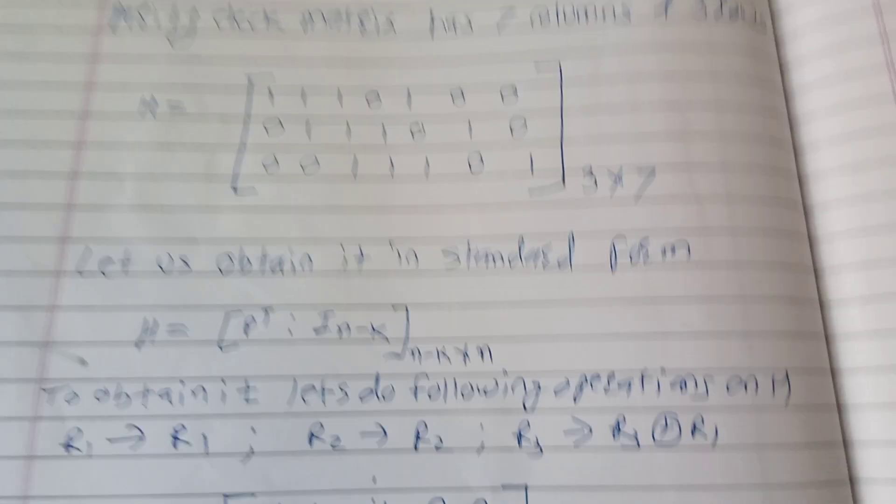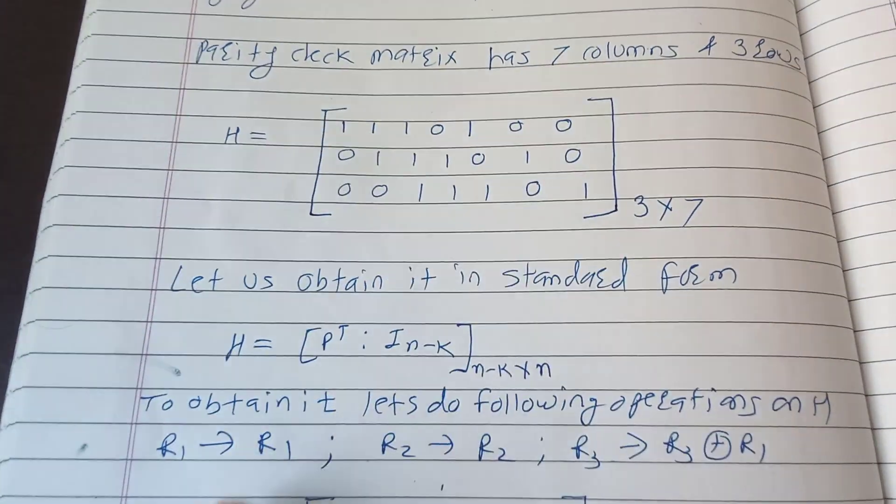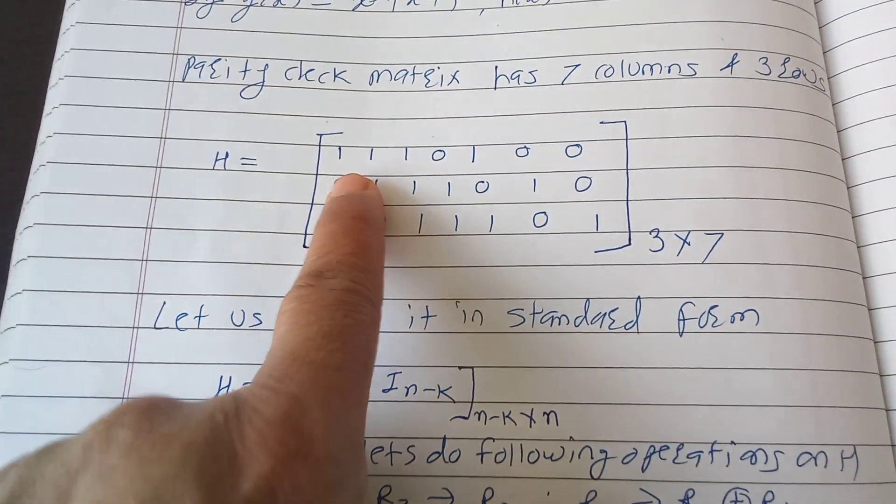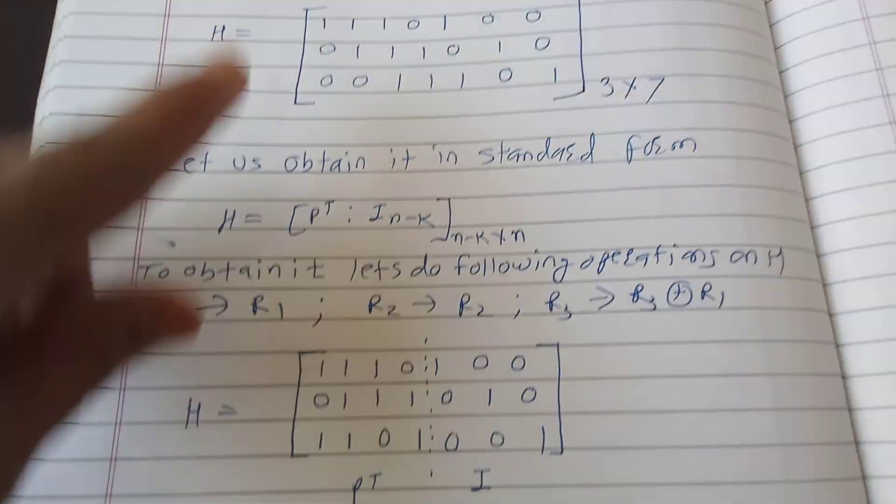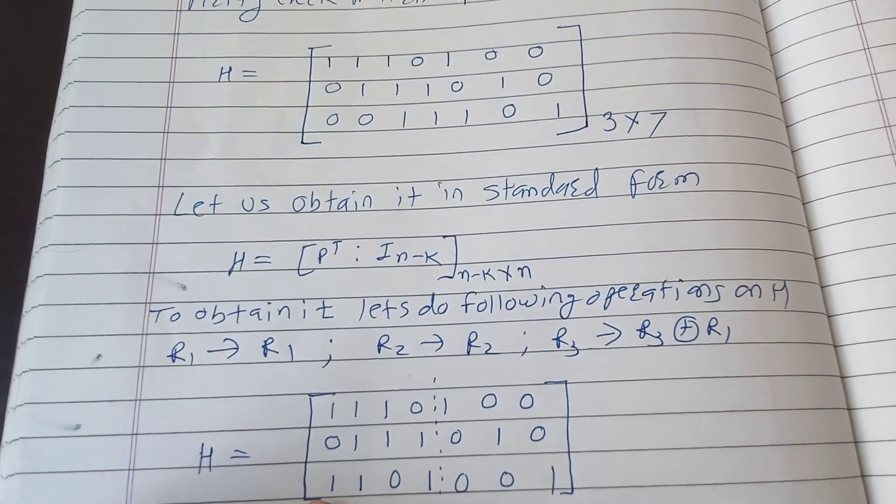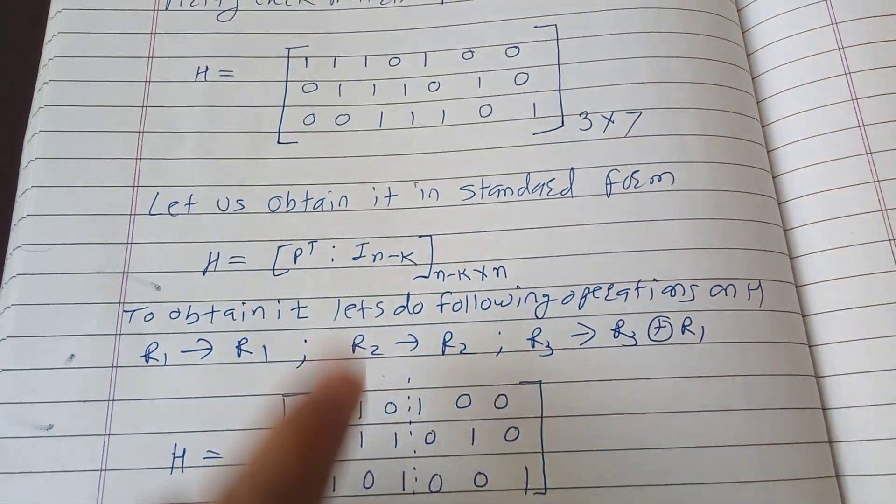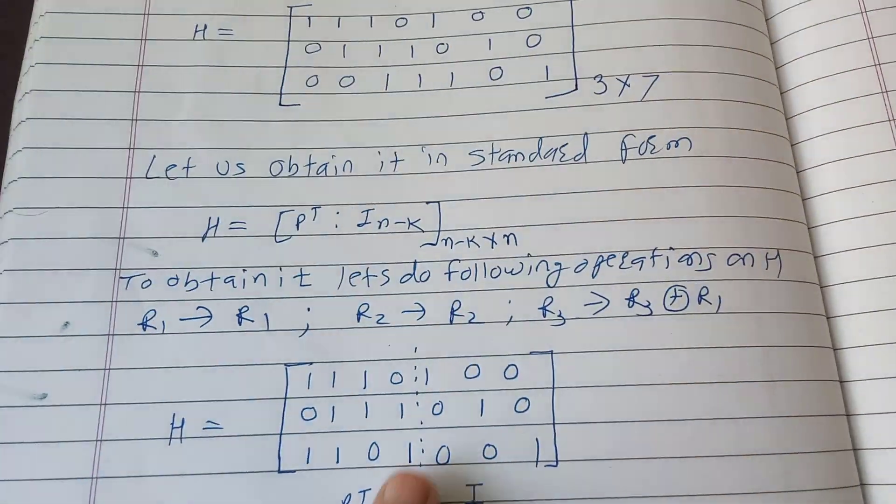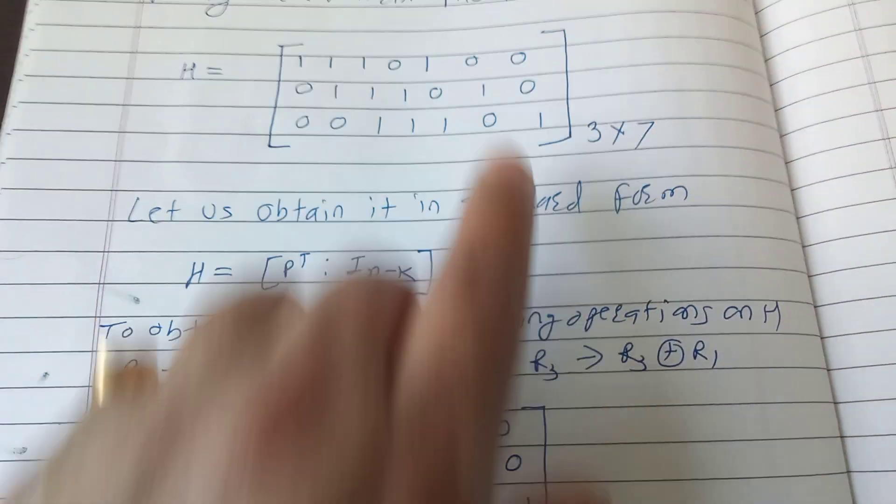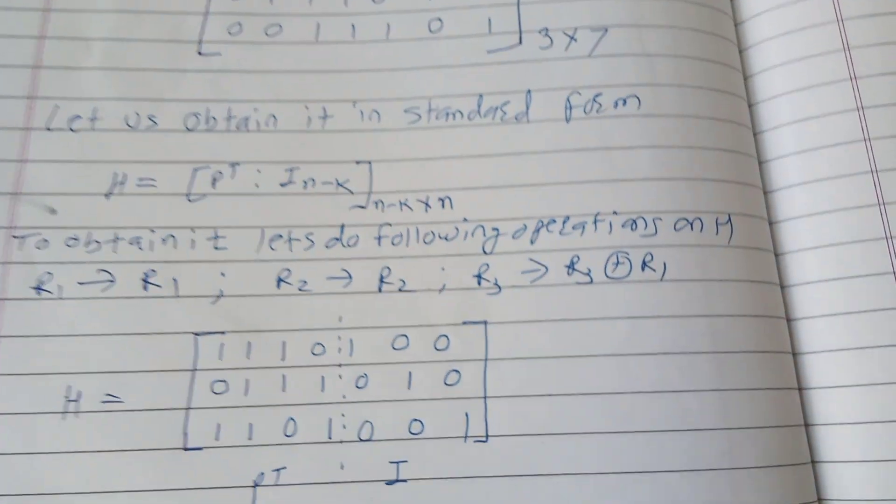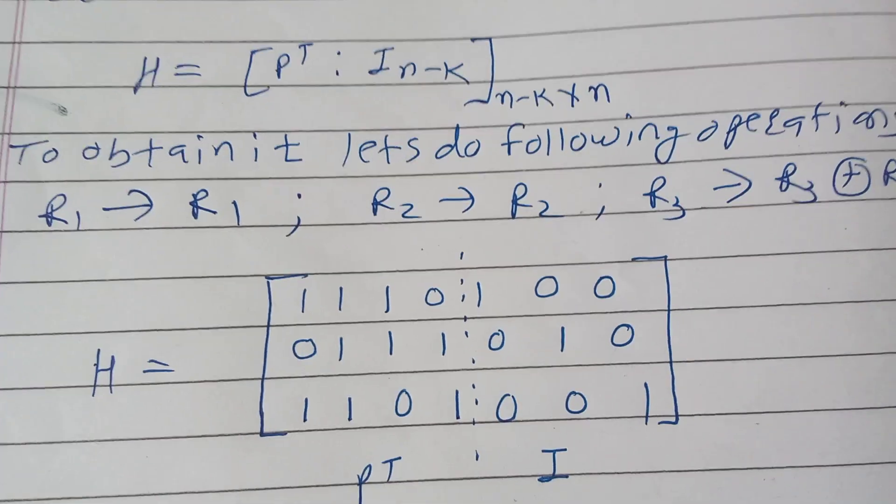So 1 plus 1 will be 0 in mod 2 and you will get 0, 0, 1 here. So the same operation is done. R1 is as it is, R2 is as it is, R3 is R1 + R3. So 1 + 0 = 1, 1 + 1 = 0 in mod 2, 0 + 1 = 1, and 1 + 1 = 0, 0 + 0 = 0, 0 + 1 = 1. So you got the standard form of the H matrix.